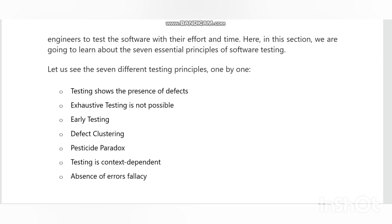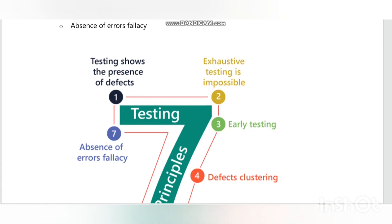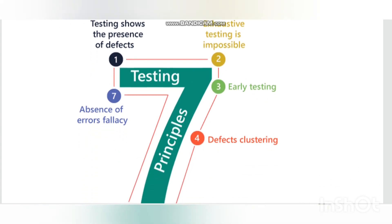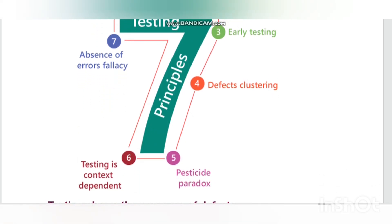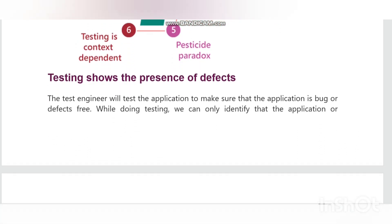Defect clustering states that a small number of modules contain most of the defects detected. This is an application of the Pareto principle to software testing — approximately 80 percent of the problems are found in 20 percent of the modules. By experience, you can identify each risky module, but this approach has its own problems: if the same tests are repeated over and over again, eventually the same test cases will no longer find new bugs.